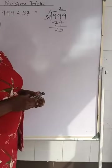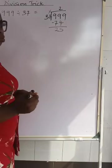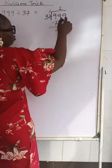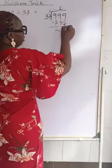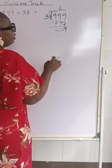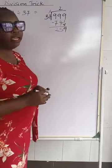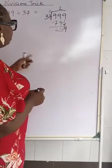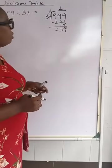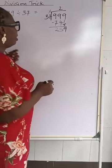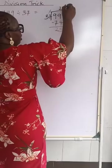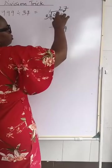37 going into 25, is it possible? No, because 25 is smaller. So we bring down the 9 here. It will now be 37 going into 259. How many times will 37 go comfortably into 259? That is 7 times. We write our 7 here. Then we multiply out.